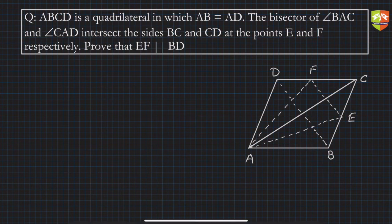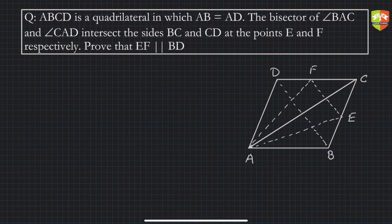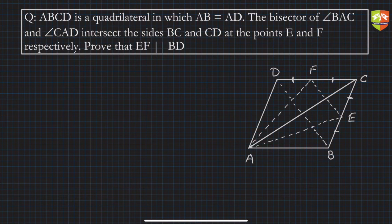Before proving formally, let's understand the approach. We have to prove EF is parallel to BD. From what we learned in the Basic Proportionality Theorem, if we can show FC/FD equals CE/EB, then by the converse of BPT, EF will be parallel to BD. This gives us the direction to work in.